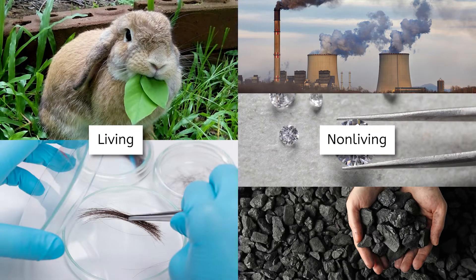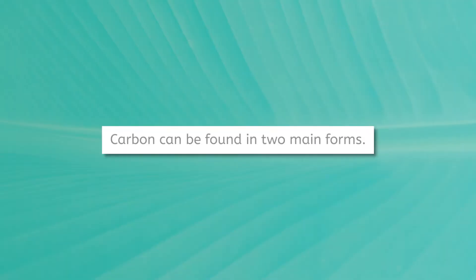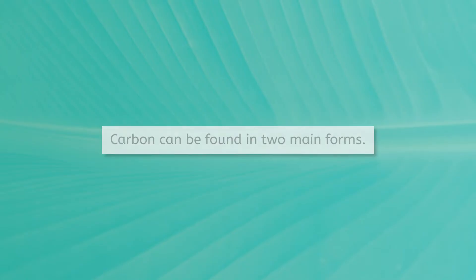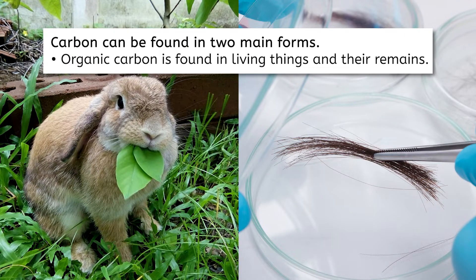One of the most exciting features of carbon is that even though it is an essential molecule inside living organisms, it can also be found in many non-living things as well. Carbon can be found in two main forms: organic and inorganic. Organic carbon is found in living things and their remains, like plants, animals, and fossil fuels.